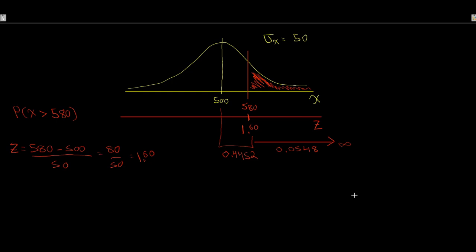But what if we didn't want to play around with looking at the table? What if we wanted to look at this a different way? We could use Excel instead of a table to look up what is the probability attached with a z-value of 1.60. Let's jump over to Excel and see that process — keep in mind it's going to get bright going from a black screen to a white screen.